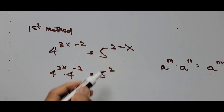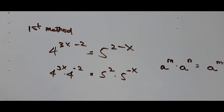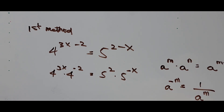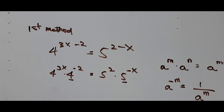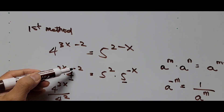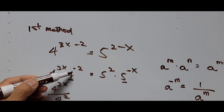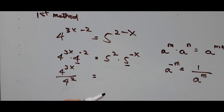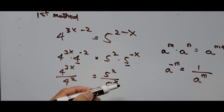The right side becomes 5 squared times 5 raised to negative x. Now we apply the negative exponent rule: a raised to negative m equals 1 divided by a raised to positive m. Since the exponents here are negative, the equation becomes 4 raised to 3x divided by 4 raised to 2, and on the right side 5 squared divided by 5 raised to x, as the negative exponents move to the denominator.